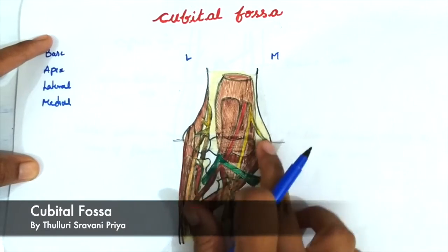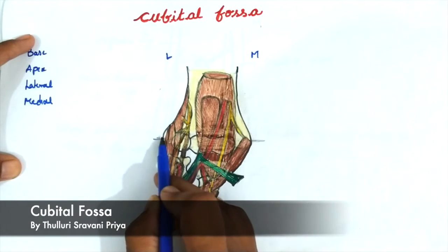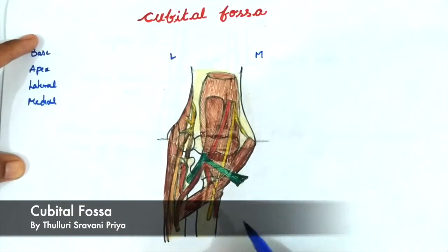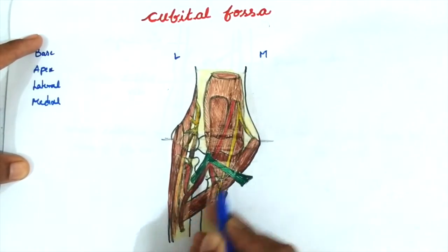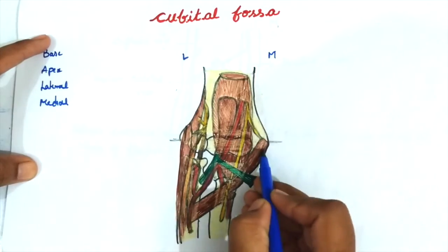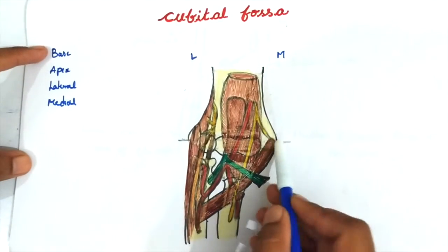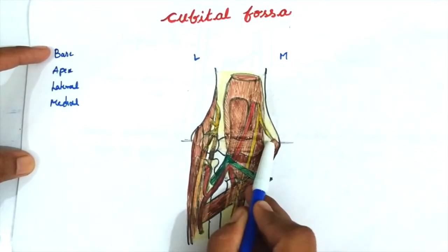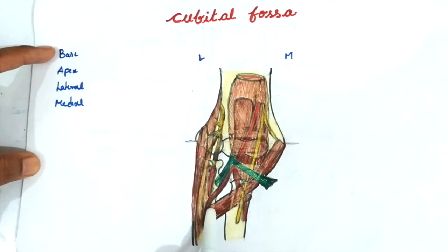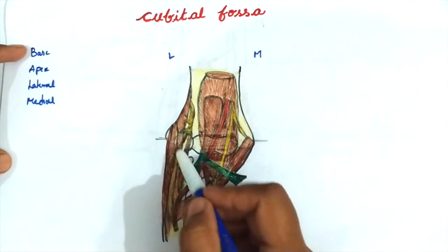The cubital fossa base is formed by joining the epicondyles — this is the lateral epicondyle and this is the medial epicondyle. The medial boundary is formed by the pronator teres muscle. The pronator teres has a medial margin and a lateral margin; the lateral margin of the pronator teres forms the medial boundary of the cubital fossa.